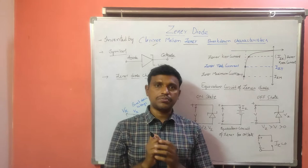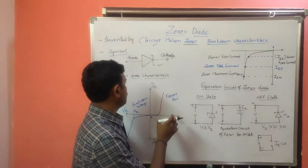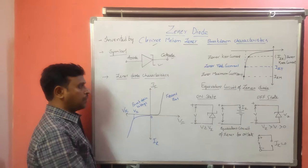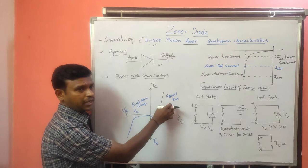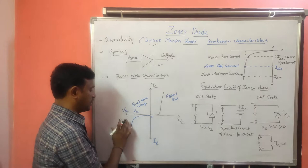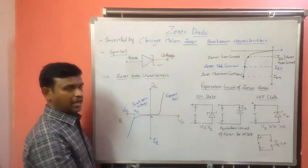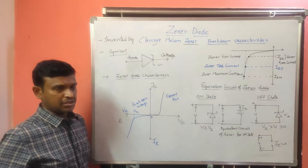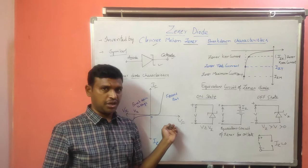Now we have the GINA diode characteristics. In this GINA diode characteristics, we have forward bias and reverse bias, same as a normal PN junction diode. I am representing the forward bias characteristics and reverse bias characteristics here. The forward bias characteristics will be the same as the normal PN junction diode.